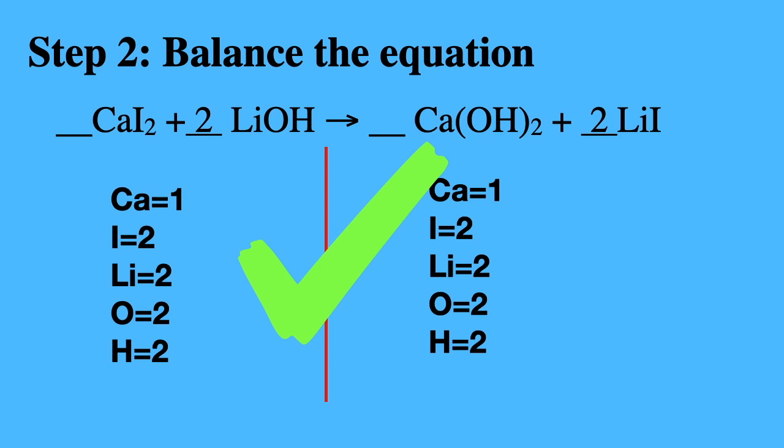On the right side, I have my products. And I added a coefficient of 2 in front of lithium iodide. That way, I can get 2 lithium and 2 iodide, making this equation balanced.